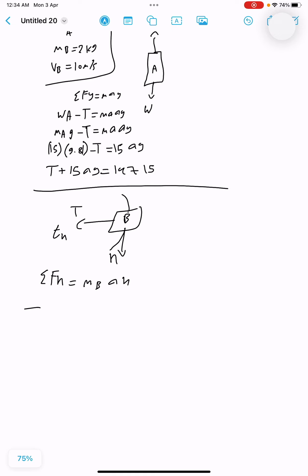Sum of Fn equals mB*an, so we have T equals mB*an. The formula for an is v squared over rho, so T equals 100 over rho.